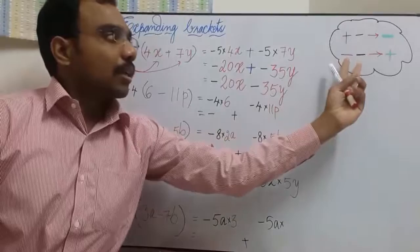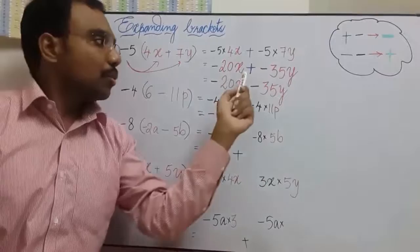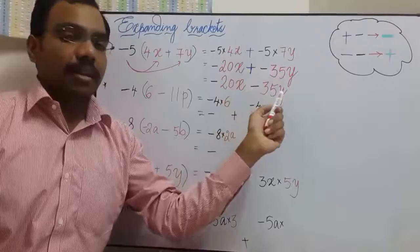Opposite signs minus, same signs plus. I hope you can remember this. Whenever you see two signs together, ensure that your final result should contain only one sign. So adding a negative 35 is same as subtracting 35y.